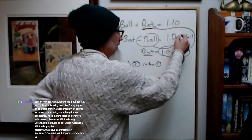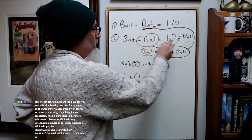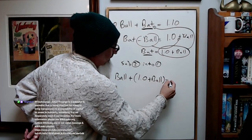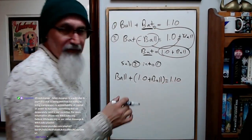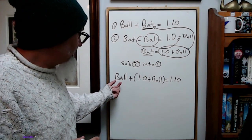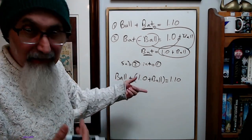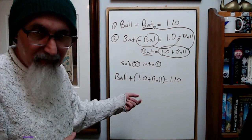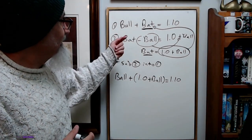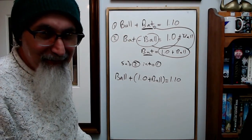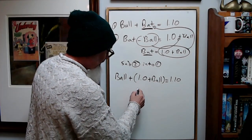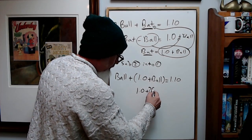Oh, because this becomes a plus, right? If the ball comes over, that's a negative, that's a plus. Plus a ball equals 1.10. I usually use x and y variables, but I'm using ball and bat because they're both B's, right? Thank you antisocialsocialist.